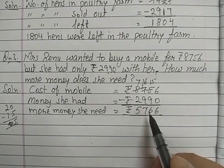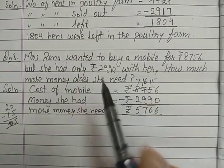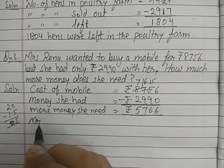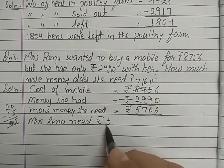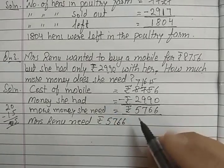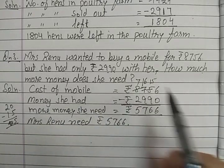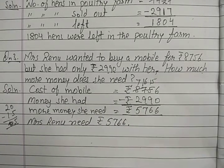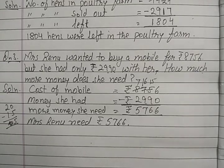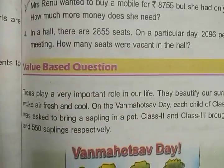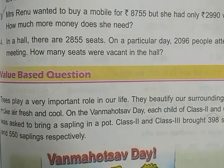So this is the more money that Mrs. Renu needed. The answer to how much more money she needs is: Mrs. Renu needs rupees 5,766 more to buy the mobile. Tomorrow we will discuss the next question — you can try to solve it — and then we will discuss the value-based question and brain teasers. Thank you.